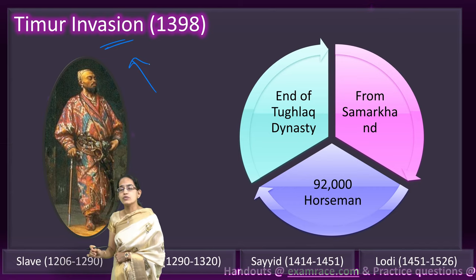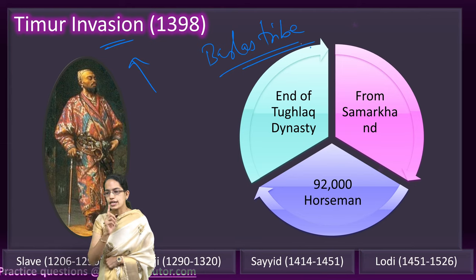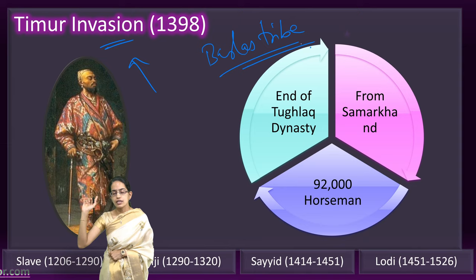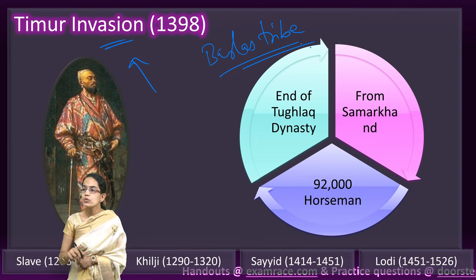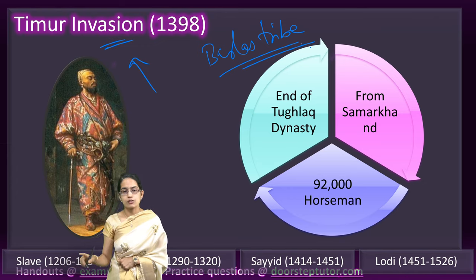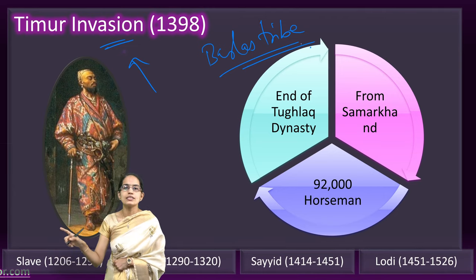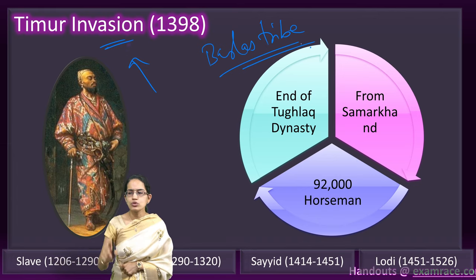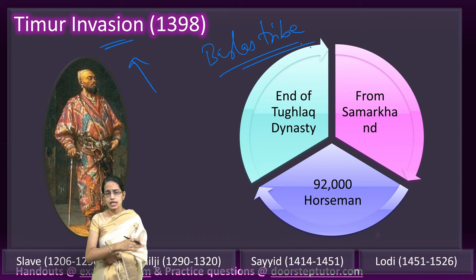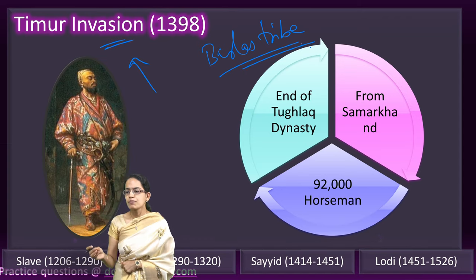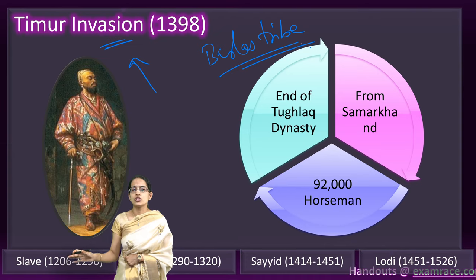With more than 92,000 horsemen, Timur invaded India. He was from the Barlas tribe and followed in the footsteps of Changiz Khan. He was known as Timur the Lame, or in Persian, Timur-e-Lang. In August 1398, he started from Kabul and reached Delhi in just four months. Sultan Mahmud Shah, one of the last sultans of the Tughlaq dynasty, was in power, and his wazir fled Delhi. Timur looted Delhi for 15 days, leaving three regions — Siri, Old Delhi, and Jahanpanah — completely desolate with large-scale looting and massacre.